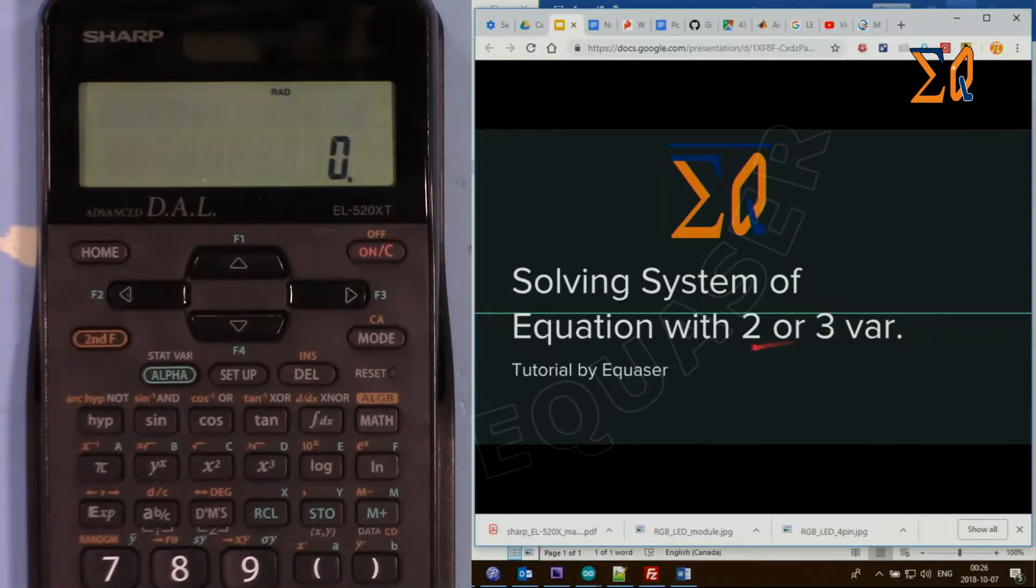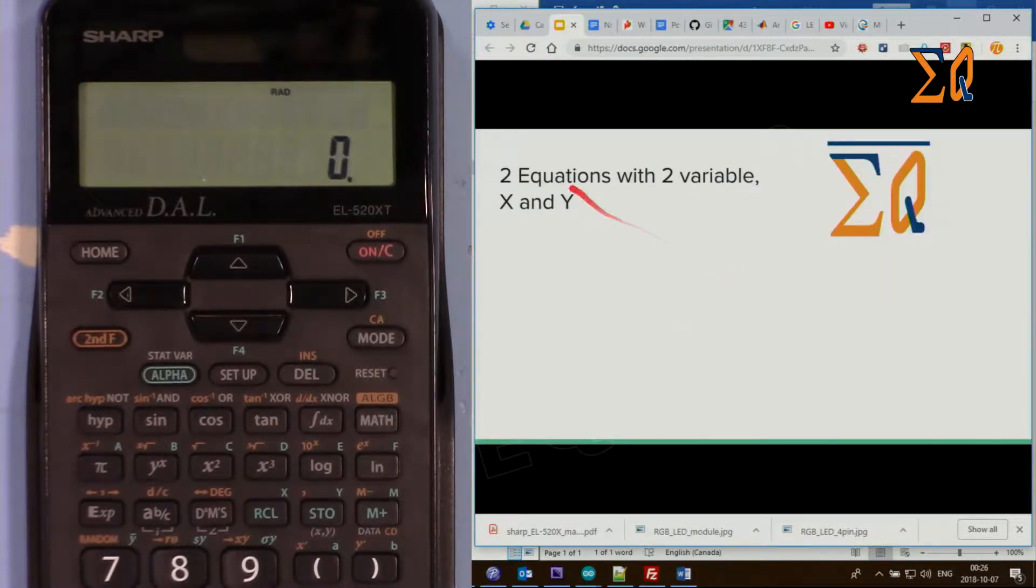For two unknowns you need two equations, for three unknowns you need three equations. So let's say for two equations we need two variables x and y, and you have a question of two equations like this: 2x + 4y = 10 and then x - 6y = -3, and you want to find the value of x and y.